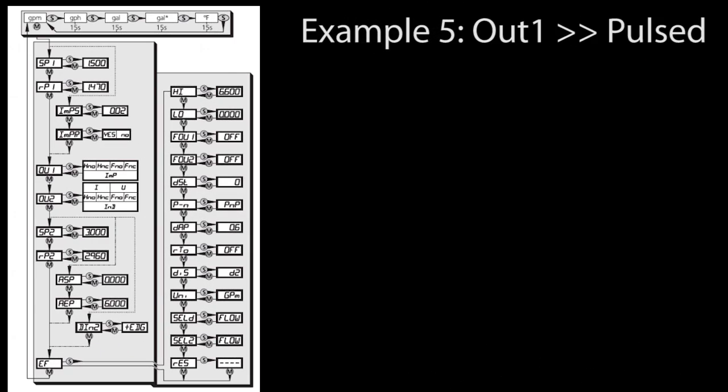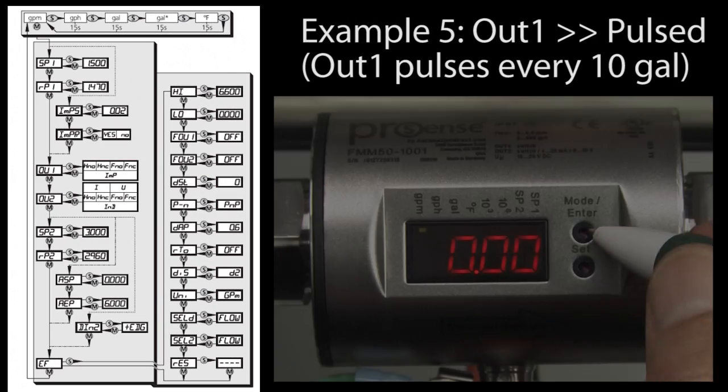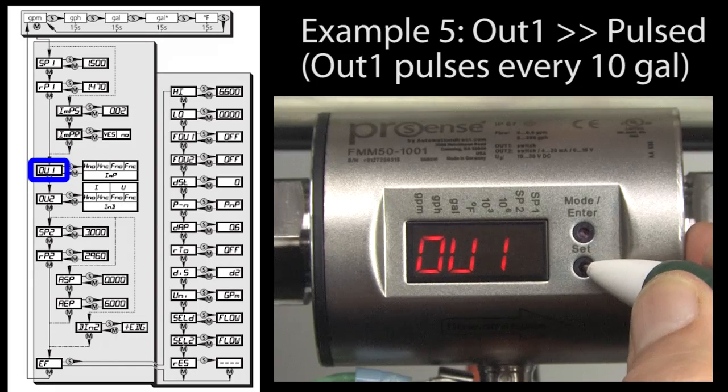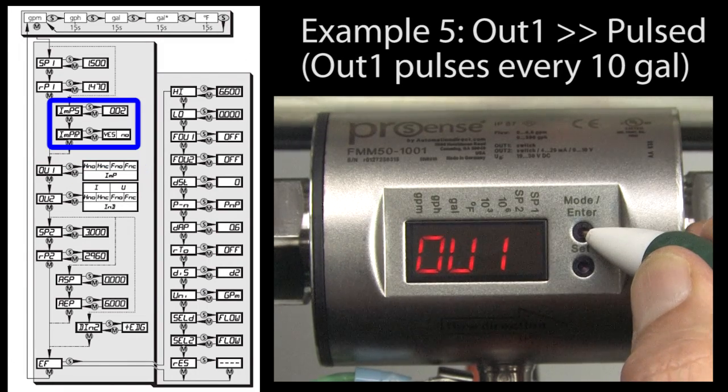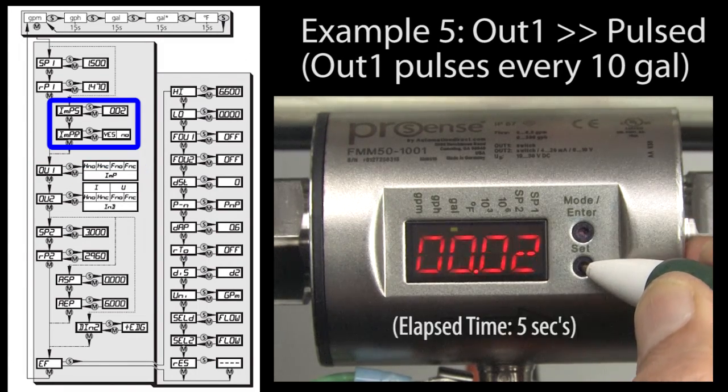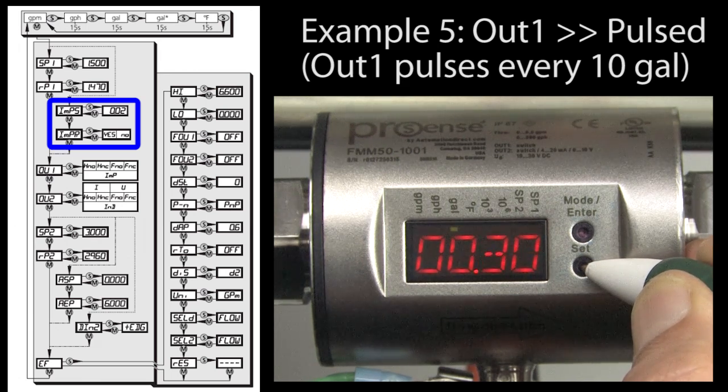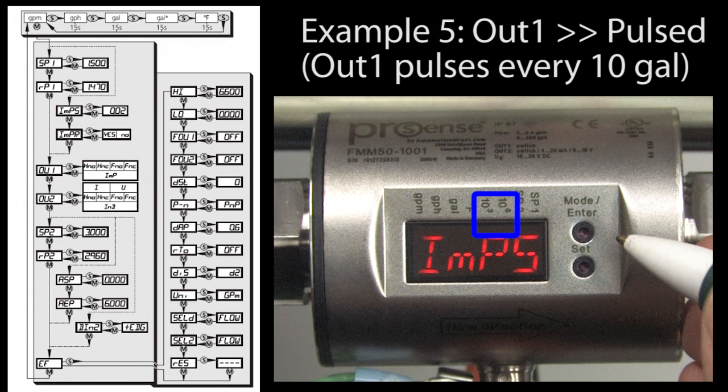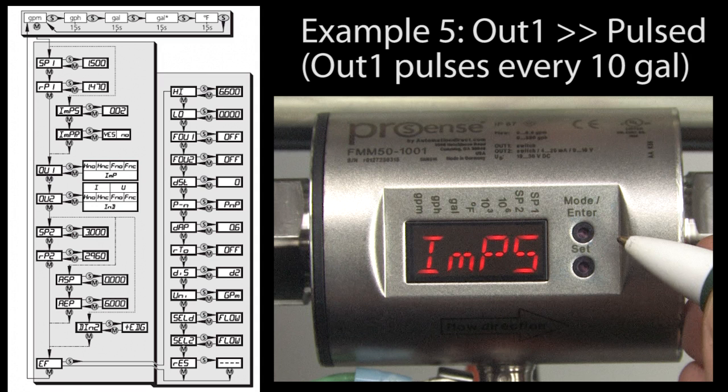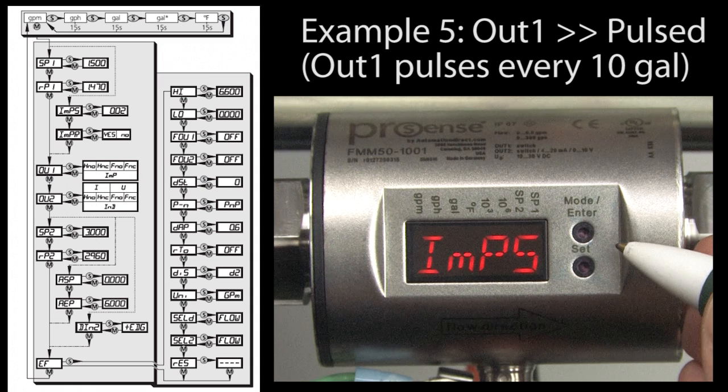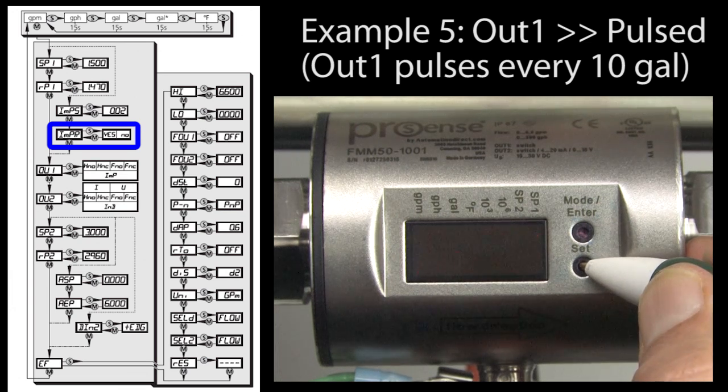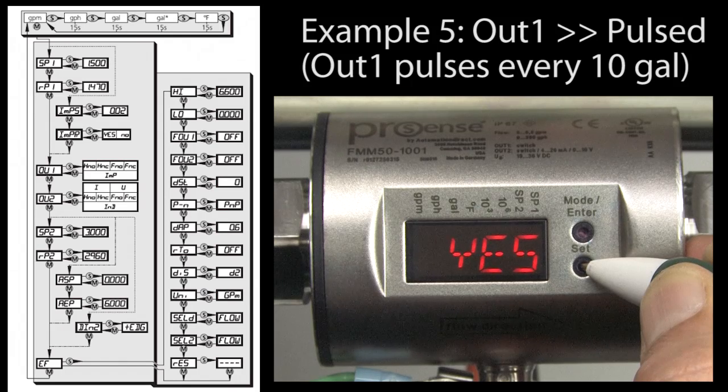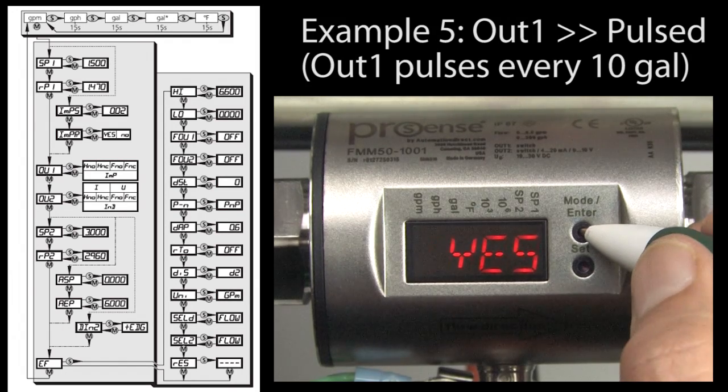Let's do another one. Let's make channel 1 issue a pulse output for every 10 gallons. Select OUT1 and choose impulse. That makes these available. In IMPS you put the number of gallons per pulse. Let's say we want to pulse every 10 gallons. Accept that. If you need larger numbers, these LEDs will turn on to indicate thousands of gallons and millions of gallons after the decimal point has run through all of its possible locations on the display. IMPR is pulse repetition. Do we want just one pulse when the event happens or do we want to pulse every time we get another 10 gallons? Well, we want it to repeat so we select yes.